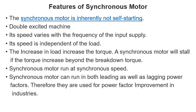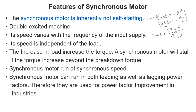Here you can see some features associated with synchronous motors. First, it is not self-starting — we have already seen the reason. Second, it is a double excited machine: the stator needs AC excitation and the rotor side needs DC excitation, and both excitations are necessary for proper working. Third, the speed can be varied only by changing the frequency, because synchronous speed NS equals 120f divided by P and the number of poles is fixed — so the only way to change synchronous speed is by changing the frequency.